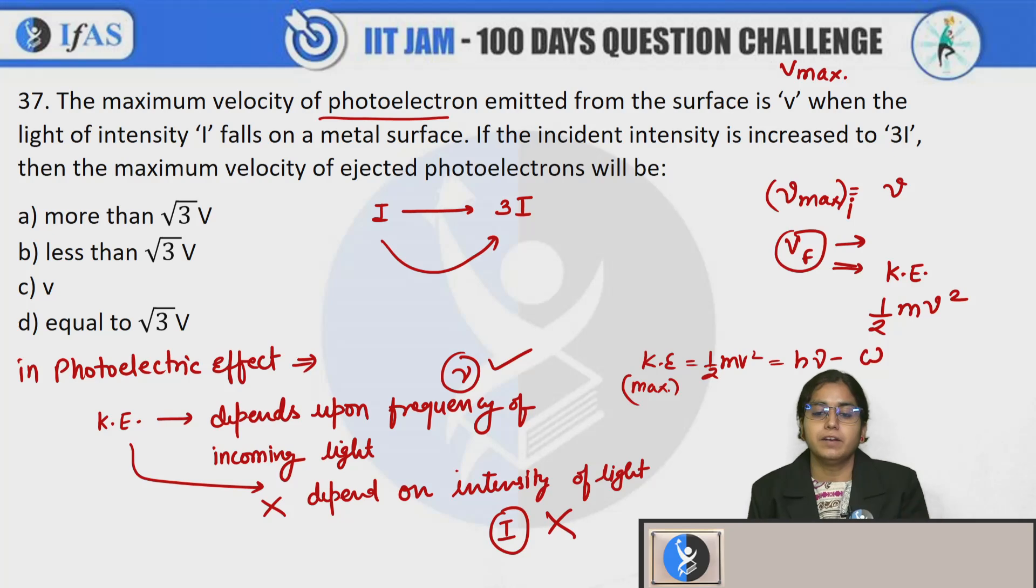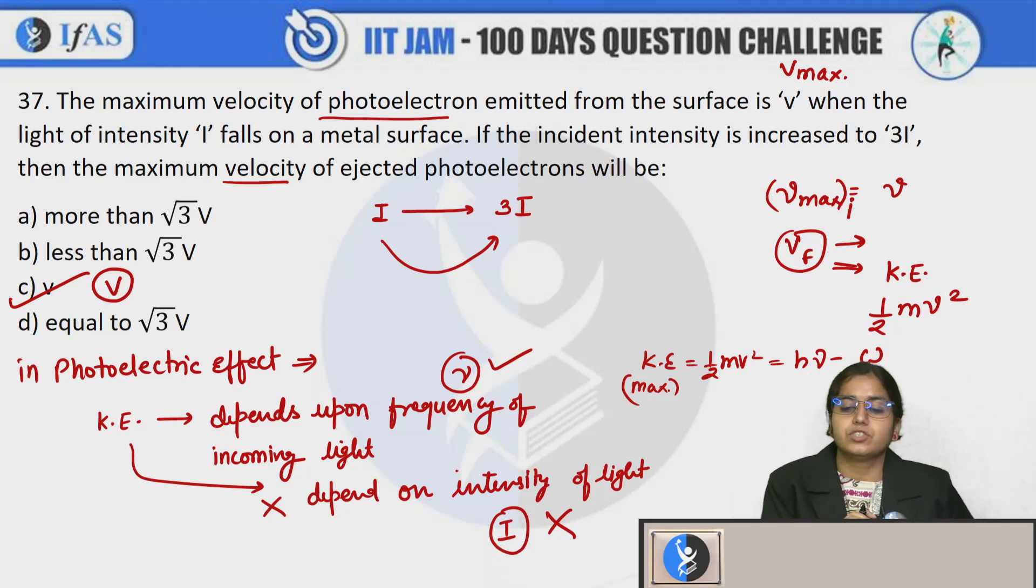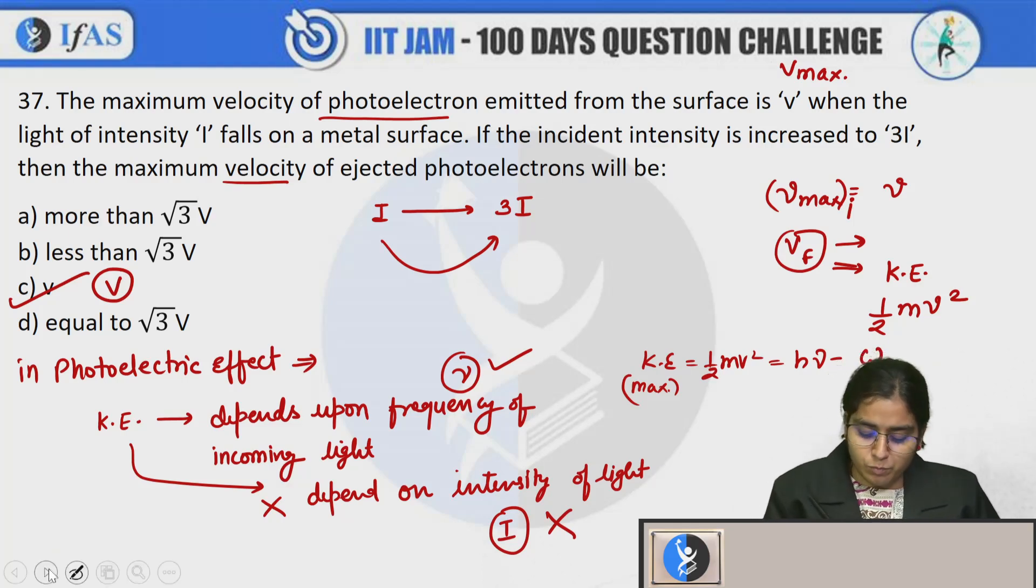If this is not intensity dependent, then your maximum velocity will be remaining unchanged. The value will be again v only. It will remain unchanged.